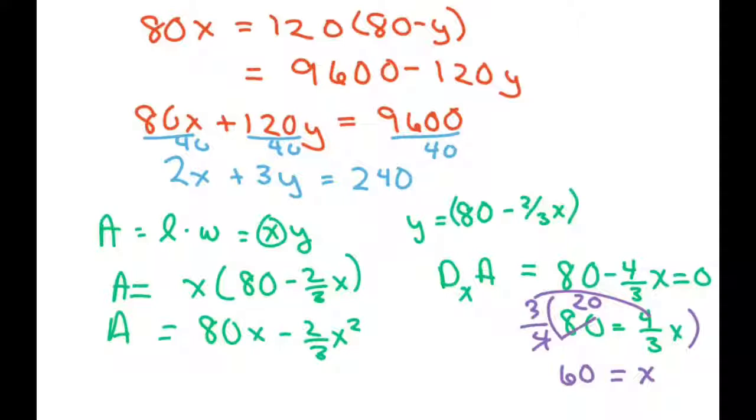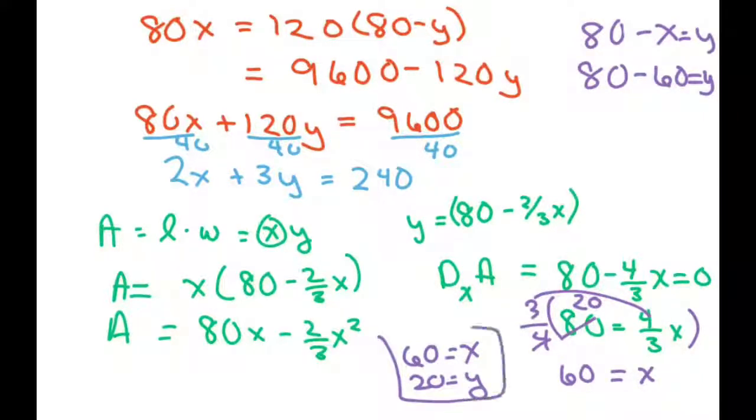If 60 is X, then we're going to have our Y. Y is going to be 40, because you have 80 minus X, so 80 minus 60 gives you 20 for Y. Our dimensions are 60 for X and 20 for Y. That's all, thank you, have a nice day.